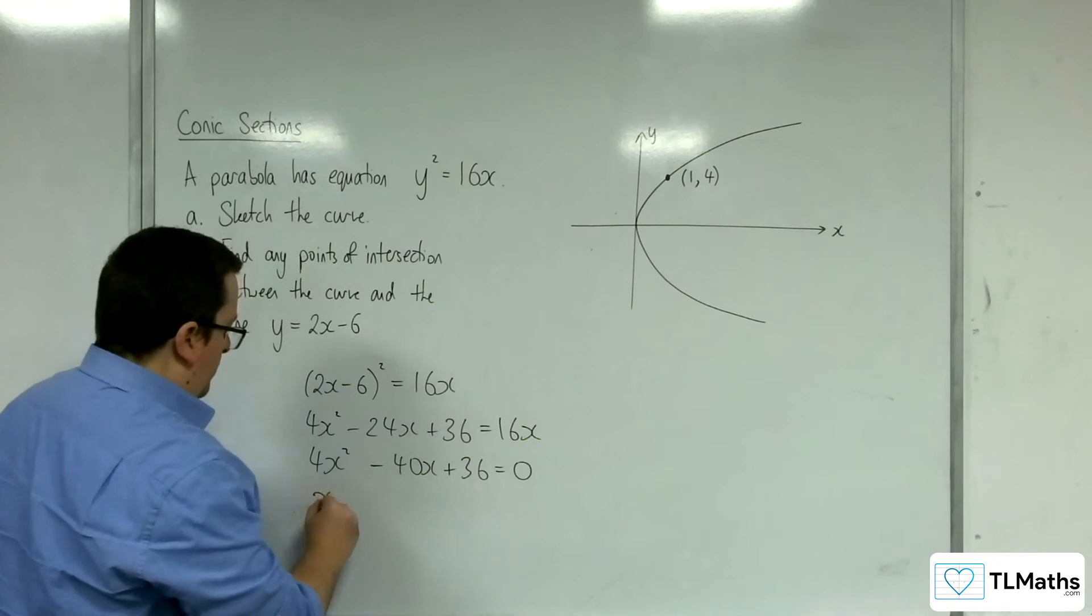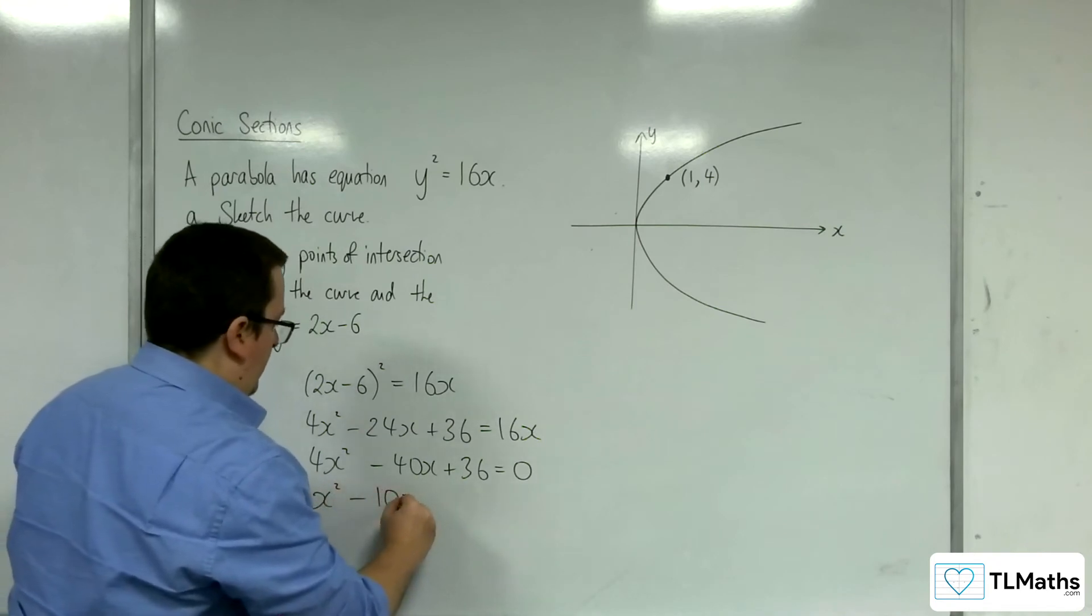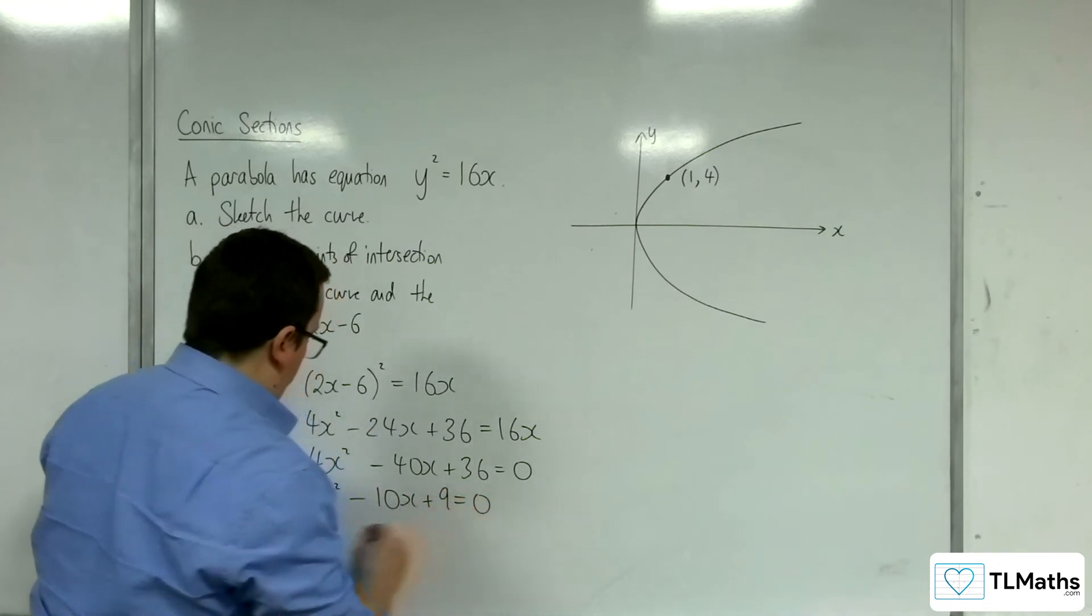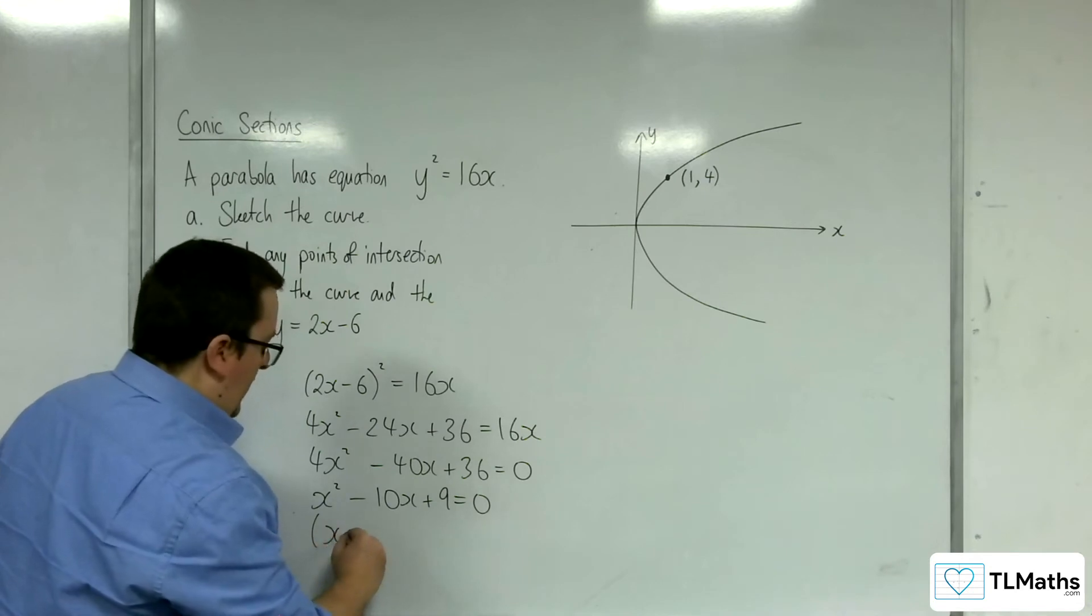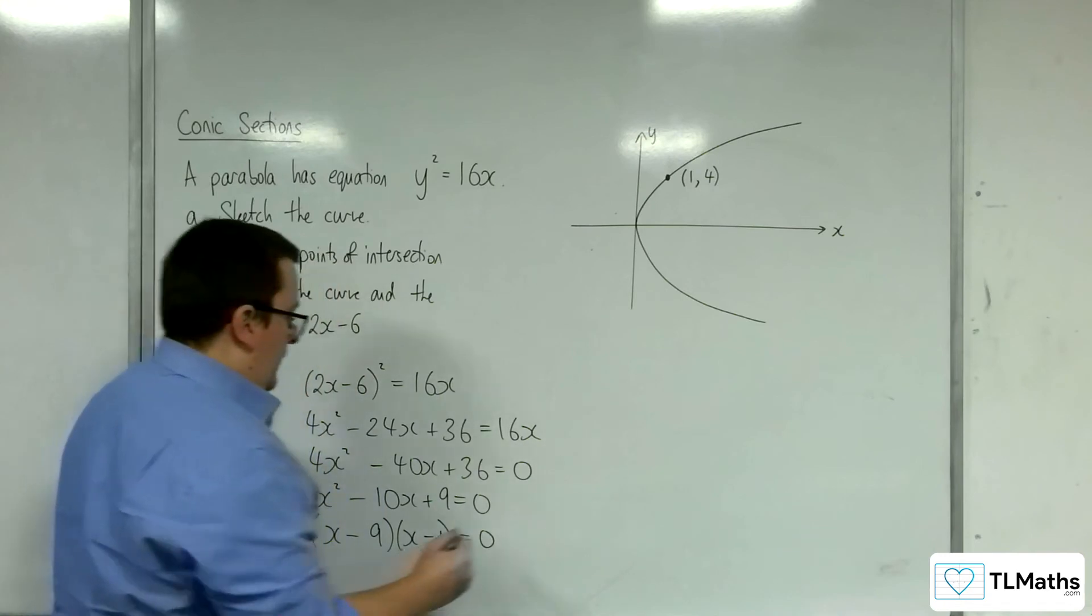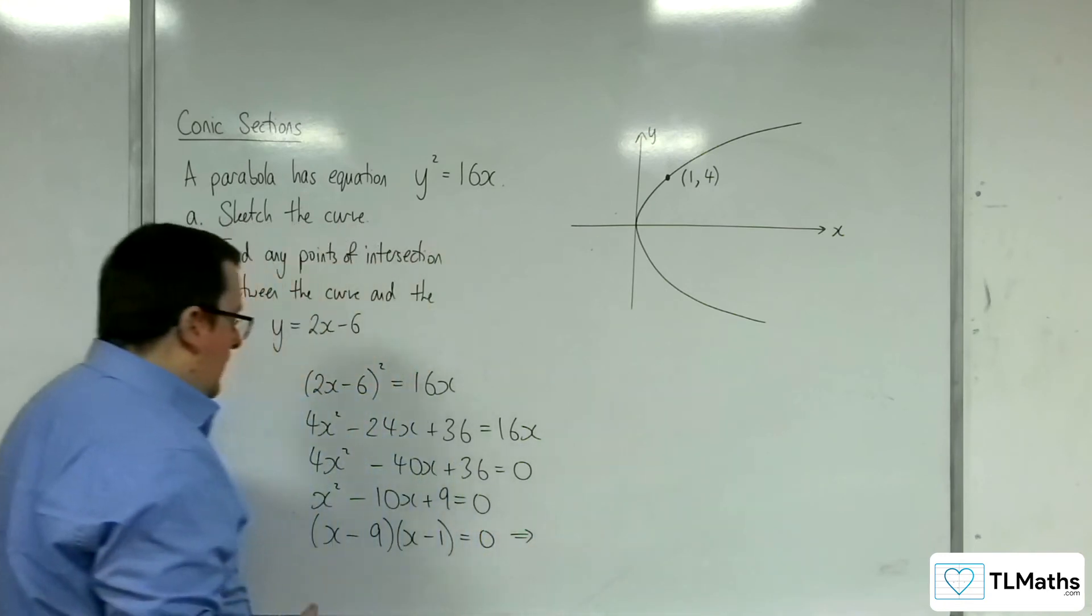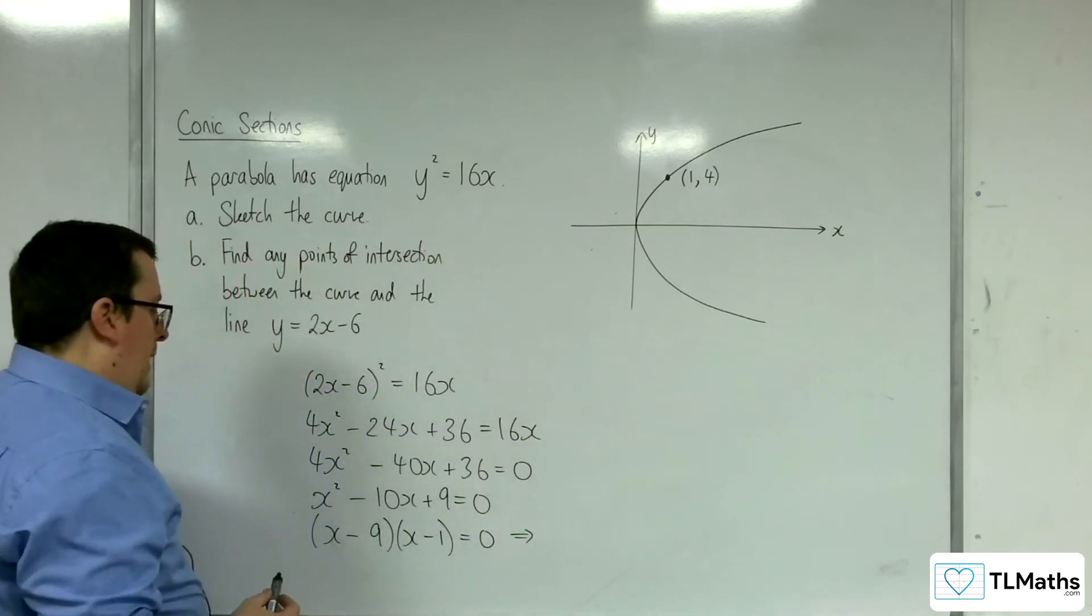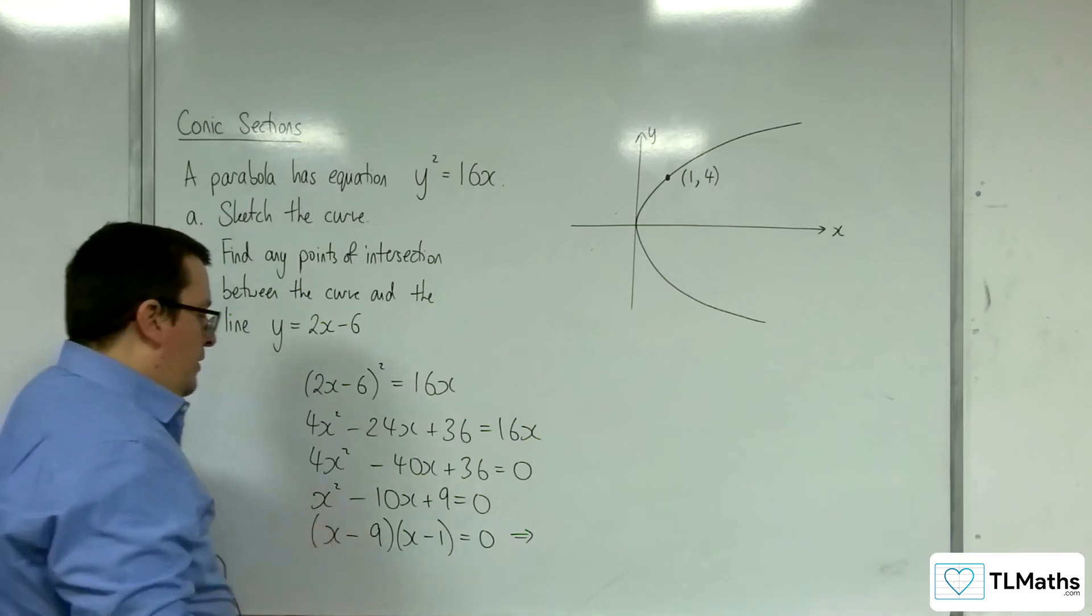Divide through by 4. So x squared take away 10x plus 9 equals 0. So x take away 9, x take away 1, factorising that. And so x equals either 1 or 9.